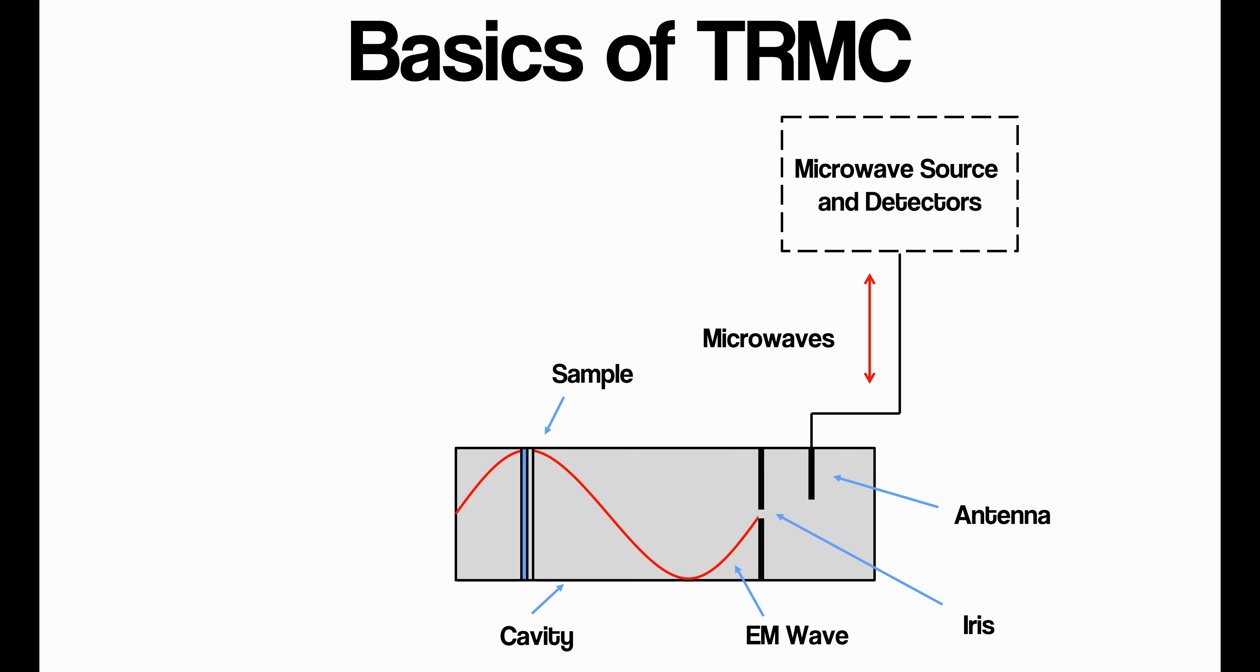Now we put in the sample we want to measure. We position the sample one-quarter of the distance along the cavity, either one-quarter of the distance from the front or one-quarter of the distance from the back. We do this because we want the sample to be held at the maximum of the electric field. So by placing the sample at one of the maxima of the electric field, we remove the spatial dependence, and we're left with this slightly simpler equation.